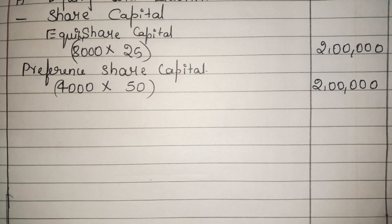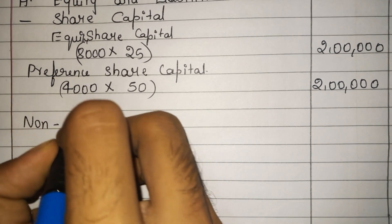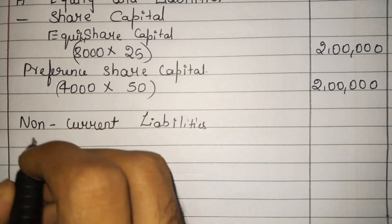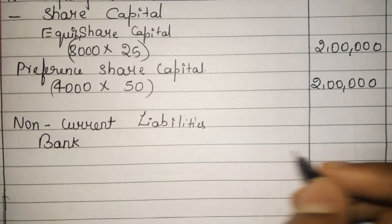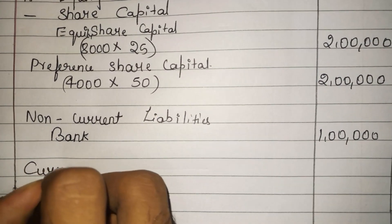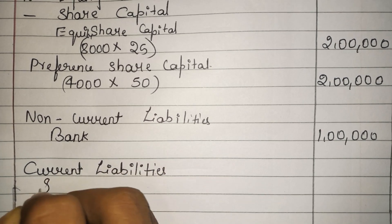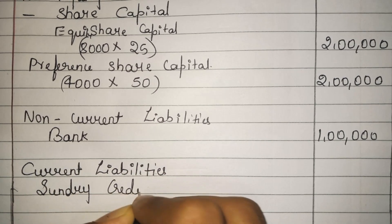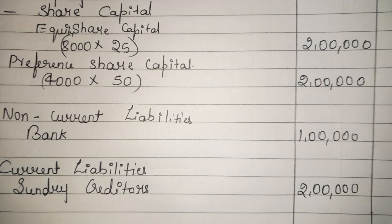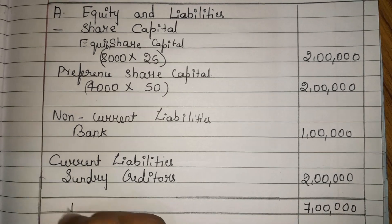We don't have any reserves and surplus or capital reserve. The next component is non-current liabilities — under that we have bank loan of 1 lakh rupees. Next we have current liabilities — under that we have sundry creditors of 2 lakh rupees. Adding all: 2 lakh plus 2 lakh plus 1 lakh plus 2 lakh equals 7 lakh, which is the total of all liabilities.